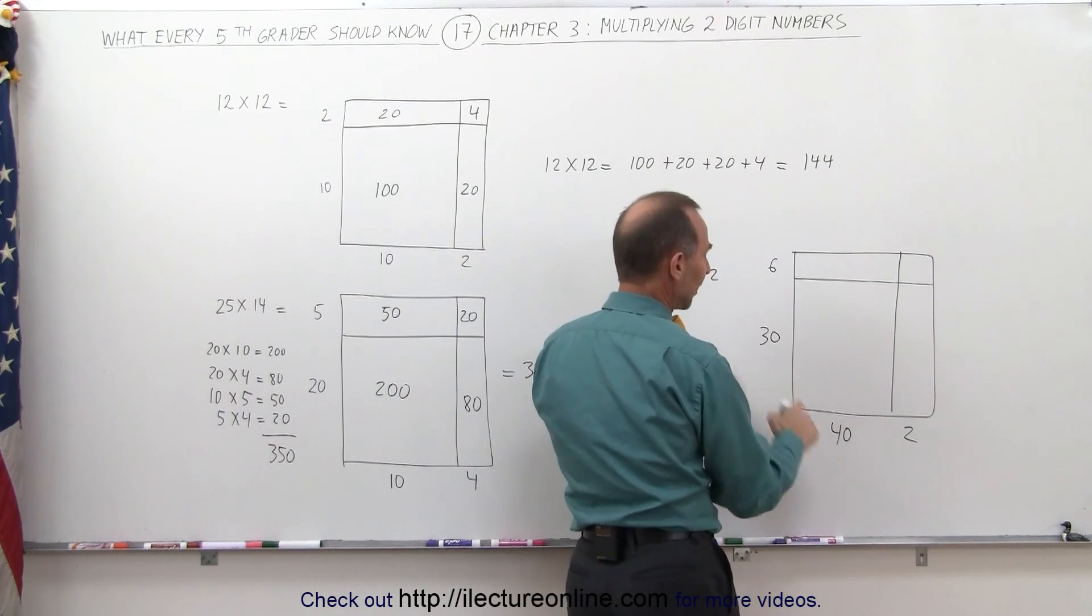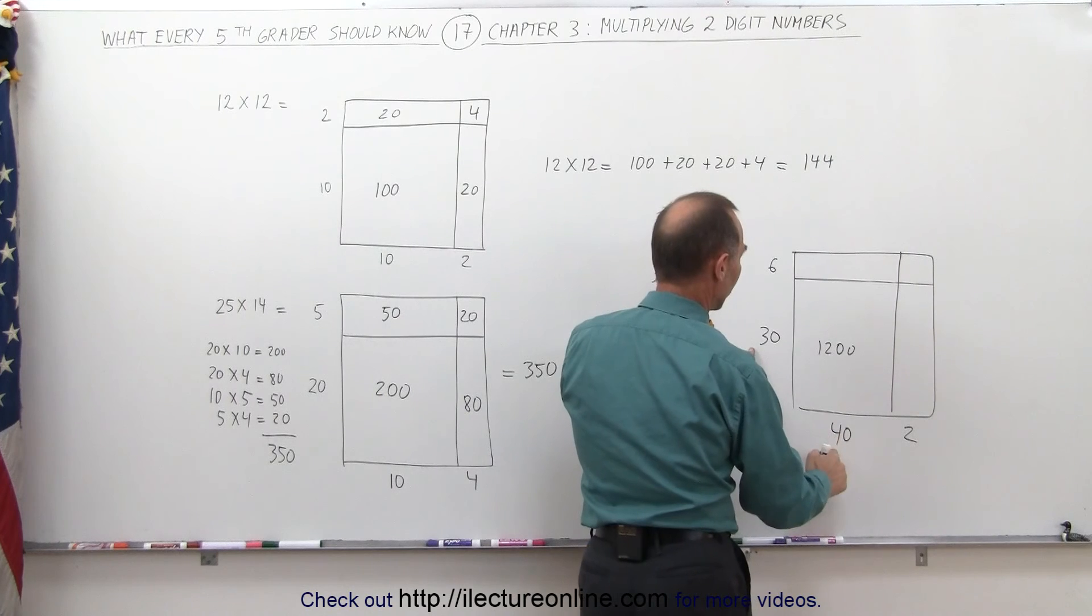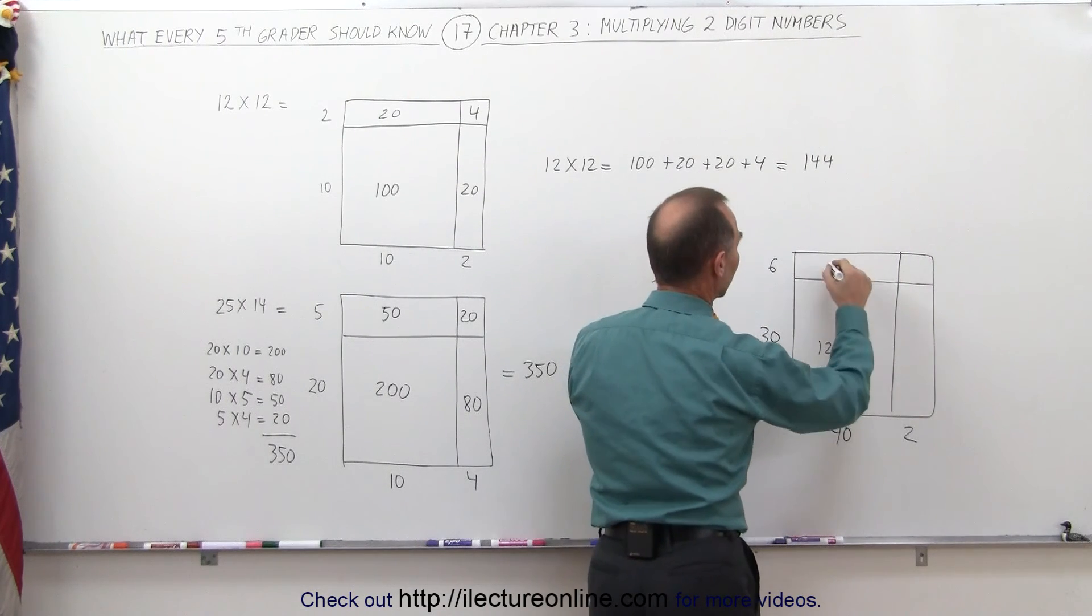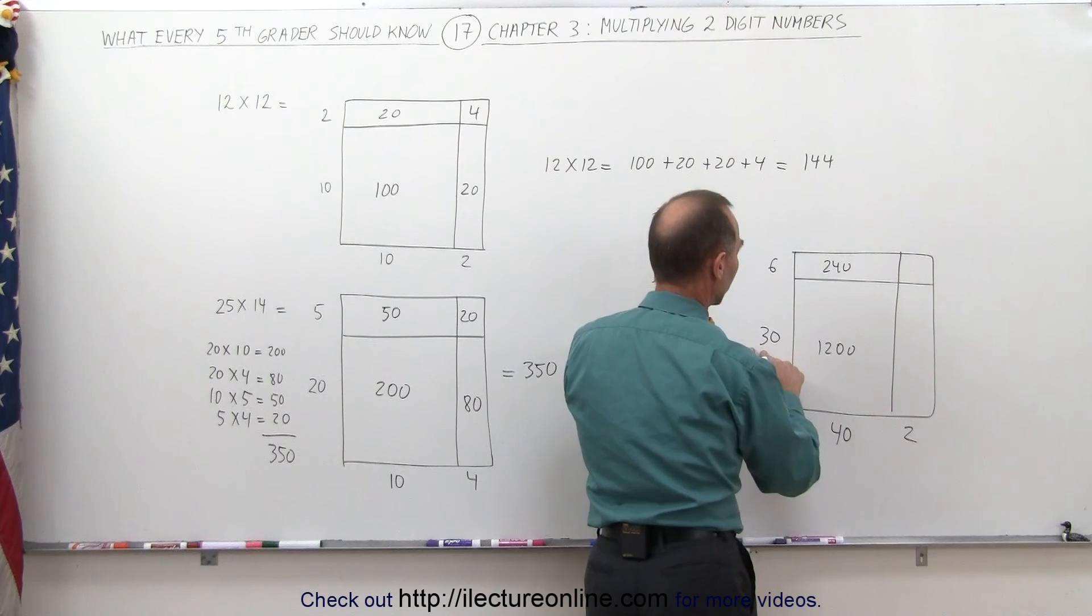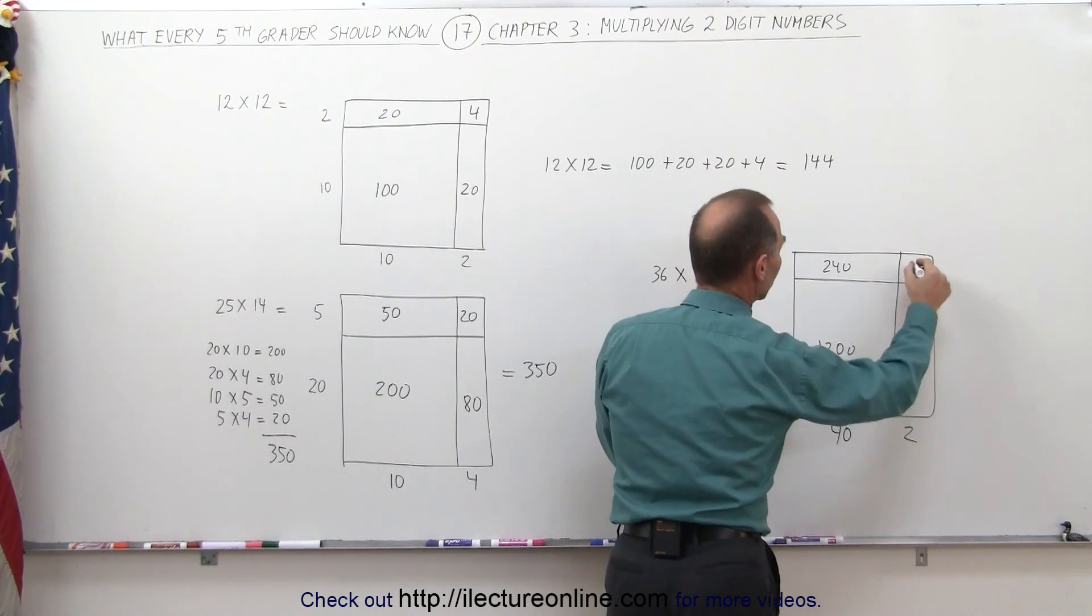30 times 40. 3 times 4 is 12. Add to 0. So you get 1200. 40 times 6. 6 times 4 is 24. Add a 0. You get 240. 30 times 2 is 60. And 6 times 2 is 12. And now all you have to do is add those together.